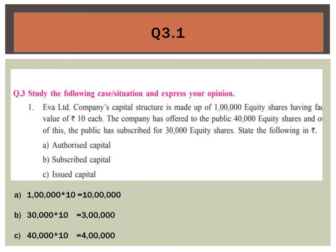The first question: EVA Limited company's capital structure is made up of one lakh equity shares having a face value of rupees 10 each. The company has offered to the public 40,000 equity shares, and out of this the public has subscribed for 30,000 equity shares. State the following in rupees. The authorized capital consists of one lakh equity shares of face value rupees 10 each, that is one lakh multiplied by 10, which gives rupees 10 lakhs.